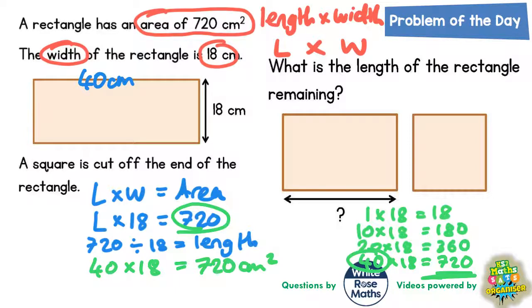But we get told that a square is cut off the end of the rectangle. Well if it's a square and the width is 18, then this means the length of the square must also be 18.